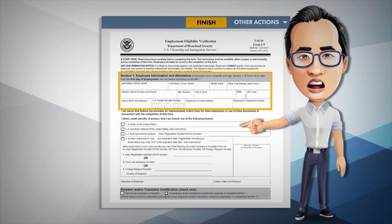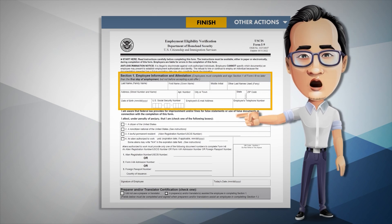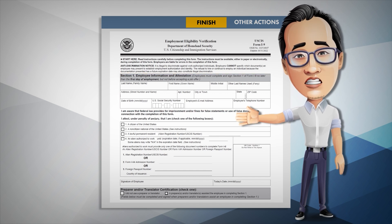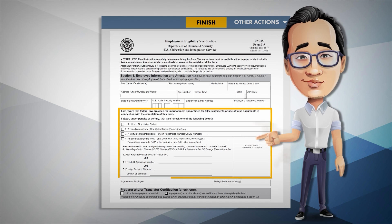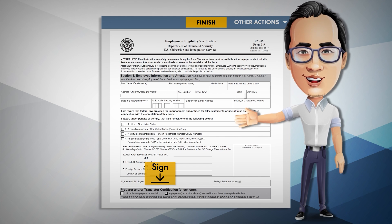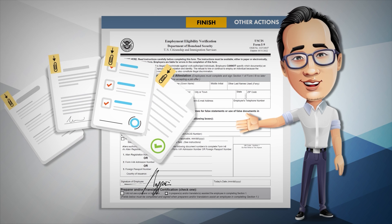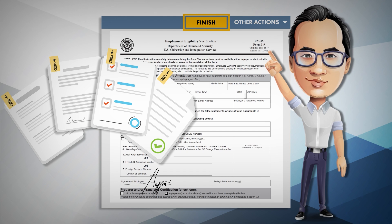Next, you'll need to enter your name, social security number, date of birth, and current address in the Employee Information and Attestation section. Then select your citizenship or immigration status. Then click the Signature button to sign and acknowledge the information on the form. When you've completed Section 1, signed and uploaded your documents, please review and confirm that everything you entered is accurate. If correct, click Finish to complete the DocuSign.